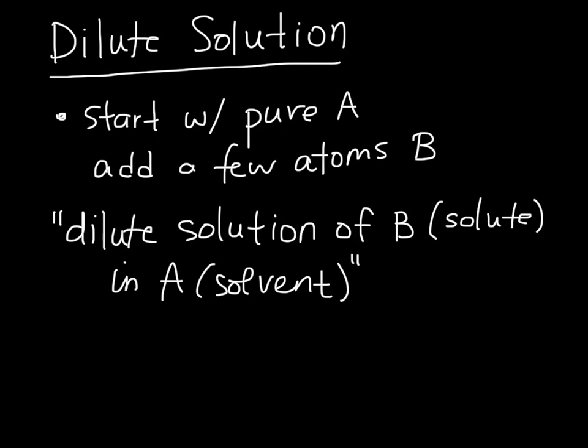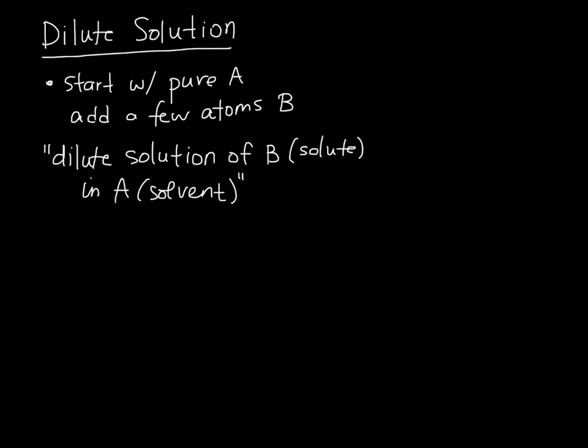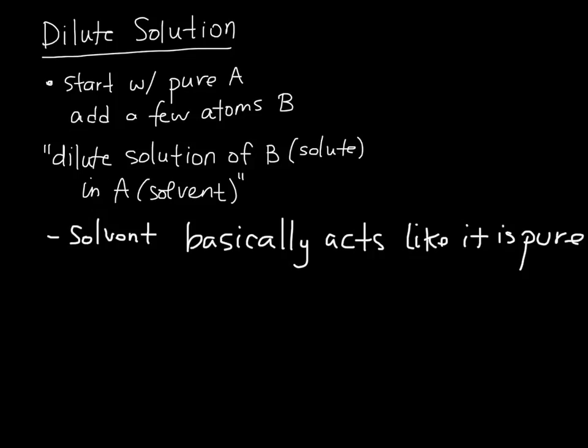So this is a dilute solution of B in A. If we consider basically how most of the A atoms are experiencing this solution, most of the A atoms don't notice that they are even in a solution, because most of them aren't surrounding any B. So we can say that the solvent basically acts like it did when it was pure. And these solvent atoms act as if they are in an ideal solution. And the definition of an ideal solution, we've encountered this before, is that the activity is equal to the composition.